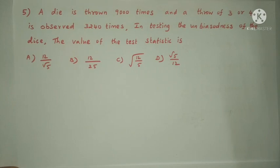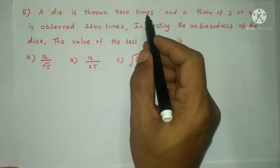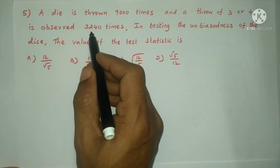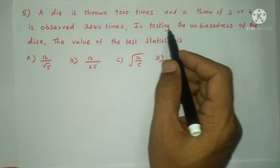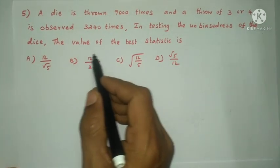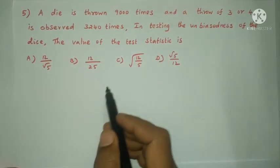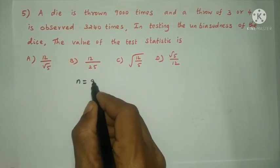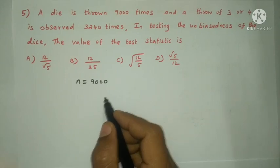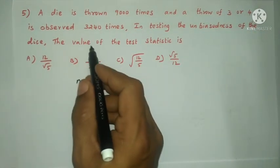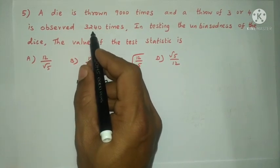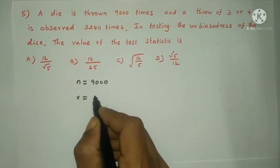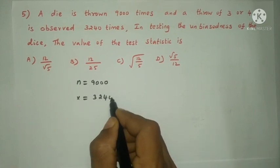Next question: A die is thrown 9000 times, and a throw of 3 or 4 is observed 3240 times. In testing unbiasedness of the die, the value of the test statistic is. n is 9000. x bar is 3240.